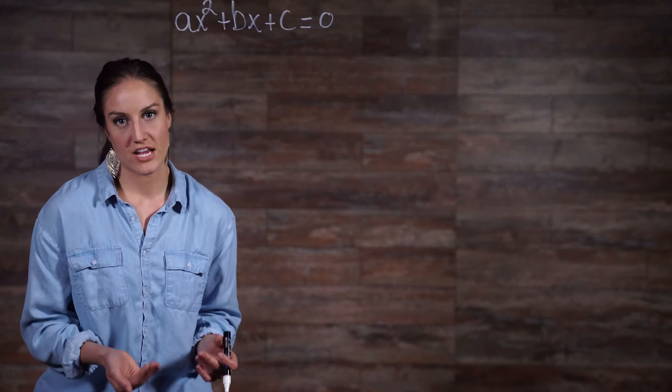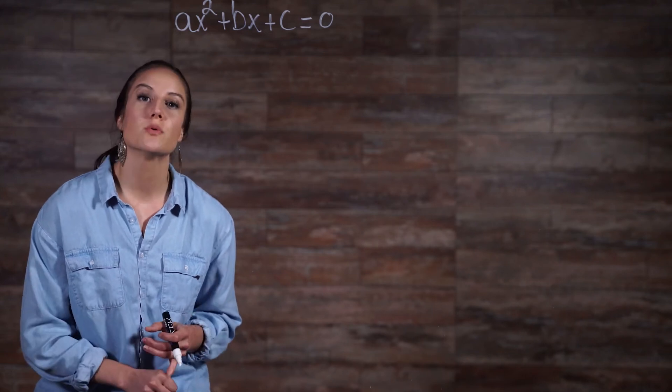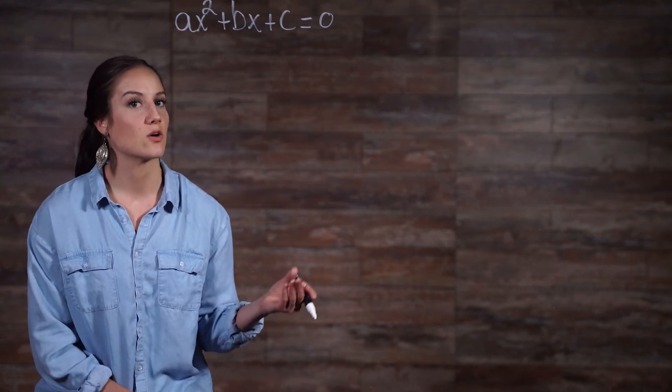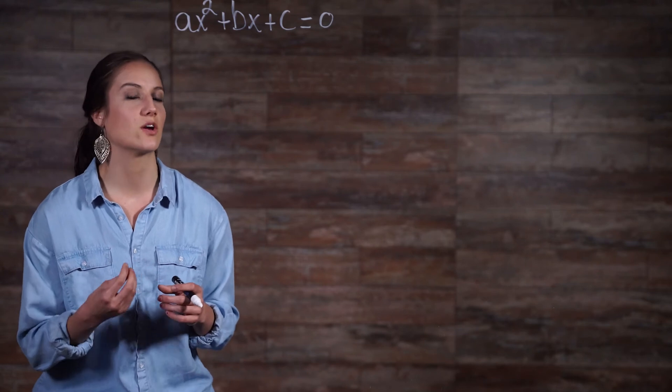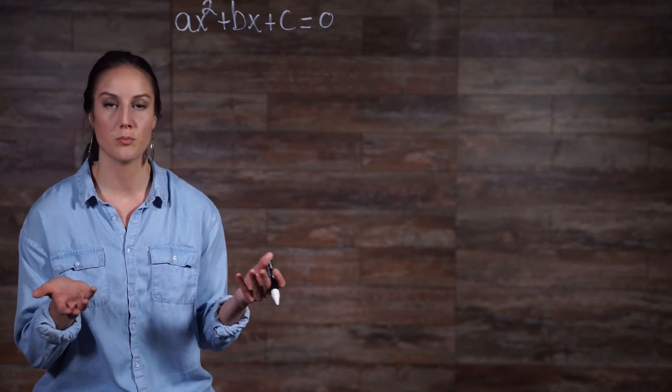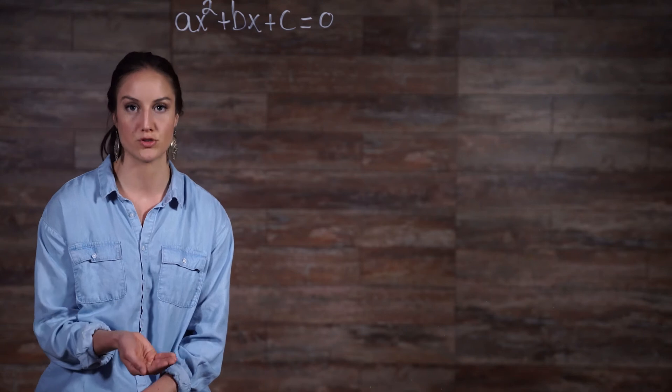In order to factor a quadratic, you just need to find what you would multiply by in order to get the quadratic. The actual quadratic equation is the expanded, or multiplied out version, of your two factors that are being multiplied.